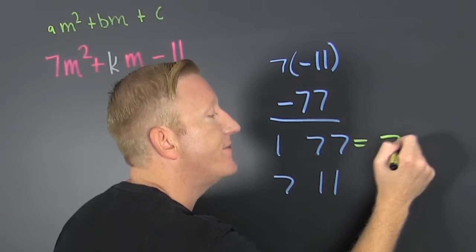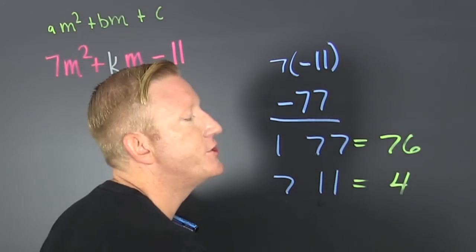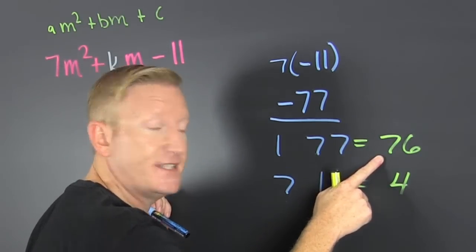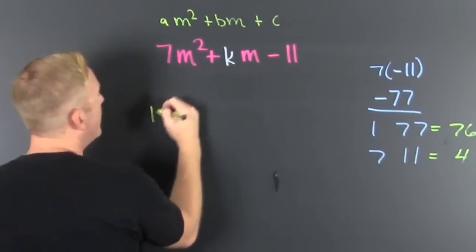Let's just leave that minus part out right now. So I'm going to get a 76 for that one and then this is a 4 for sure. Now k could be positive 76 or it could be negative 76, it could be positive 4 and it could be negative 4.